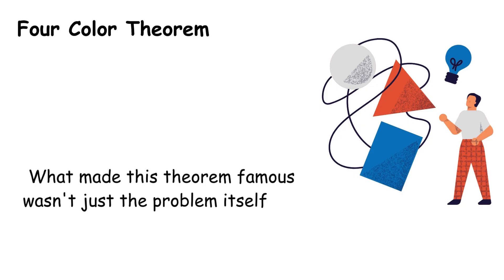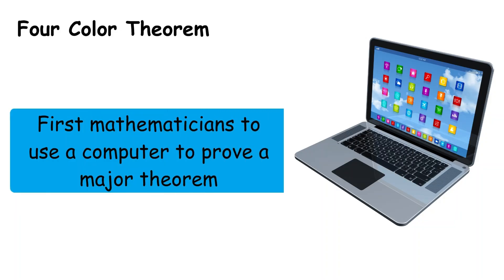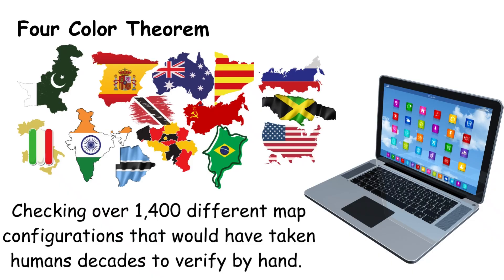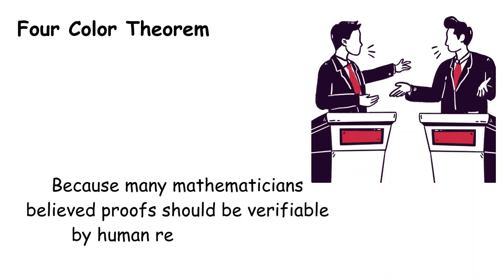What made this theorem famous wasn't just the problem itself, but how it was solved. Appel and Haken became the first mathematicians to use a computer to prove a major theorem, checking over 1,400 different map configurations that would have taken humans decades to verify by hand. This sparked huge controversy in the mathematical community because many mathematicians believed proofs should be verifiable by human reasoning alone.